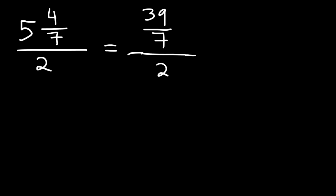So we have 39 over 7 divided by 2, or we could say divided by 2 over 1. So we can write it like this: 39 over 7 divided by 2 over 1.